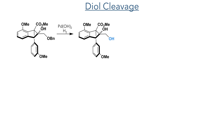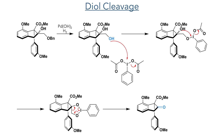With this ring expansion process now complete, the authors turned their attention towards installing the ketone group. The benzyl ether was deprotected using palladium hydroxide and hydrogen gas. This unmasked a 1,2-diol motif, which could then undergo oxidative cleavage using bis-acetoxy-iodobenzene — a mechanism similar to the malopride reaction. The primary alcohol acts as a nucleophile towards the iodine centre, which eliminates an acetate group. The binding of the second alcohol group generates a five-membered ring, which can then undergo a fragmentation reaction, producing the target ketone.